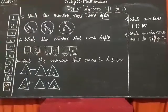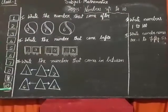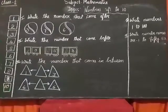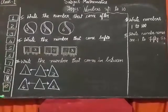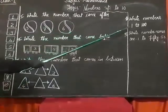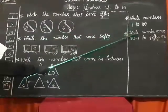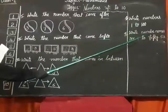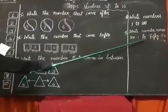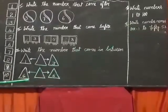Dear students, you have to take a 200-page horizontal notebook and write numbers 1 to 100 and number names ONE to FIFTY (50).